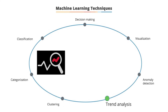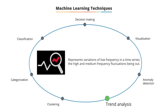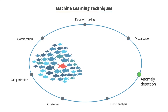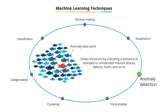Trend analysis is a technique aimed at projecting both current and future movement of events through the use of time series data analysis, representing variations of low frequency in a time series. Anomaly detection is a technique to identify unusual cases within seemingly homogeneous data. It can be key for solving intrusions by indicating the presence of intended or unintended attacks, defects, or faults.